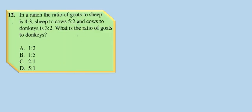Hello viewer, I want to spend a few minutes to explain a question that has been requested by certain students. The question was from a mathematics paper for the KCP 2018, question number 12. In a ranch, the ratio of goats to sheep is 4:3, sheep to cows is 5:2, and cows to donkeys is 3:2. The question is: what is the ratio of goats to donkeys?